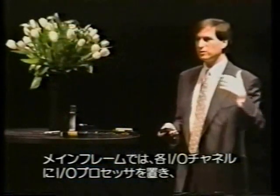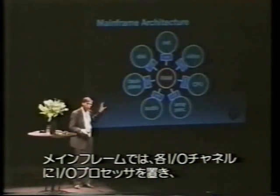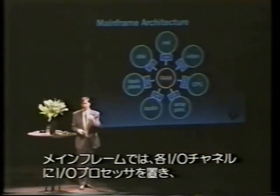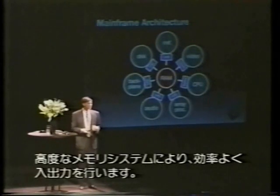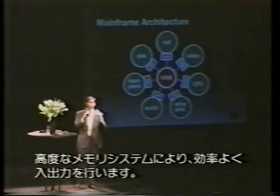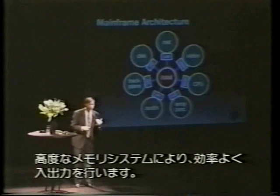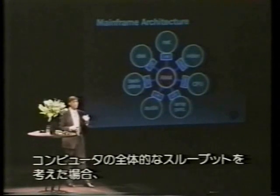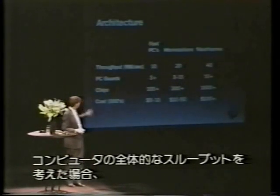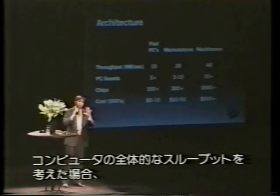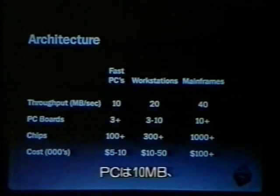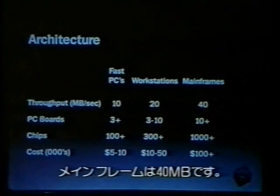So what we did was we looked at how mainframes do it. What they do is they have I/O processors on every single I/O channel, as they call them. And then they have a very sophisticated memory system, which doesn't let the processors into memory until they're ready to get in, and very efficiently get out. And what that all adds up to is this: if you look at the overall system throughput of a computer, PCs have about 10 megabytes per second, workstations about 20, and mainframes about 40. And you can see some of the other parameters there.